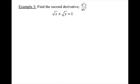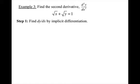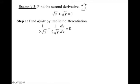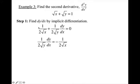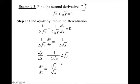For our third example, we are going to find the second derivative using implicit differentiation. Step 1 is to find dy/dx by implicit differentiation. Taking the derivative of the square root of x gives 1 over 2 square root x, plus the derivative of the square root of y with respect to x — so 1 over 2 square root y times dy/dx — equals the derivative of 1, which is 0. Solving for dy/dx: subtract the x term over and multiply by 2 square root y. The 2's cancel, and I am left with negative square root y over square root x.